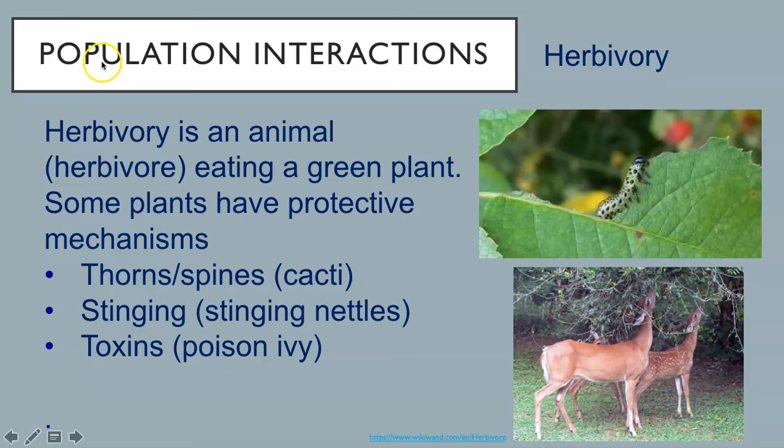Herbivory is an animal, or herbivore, eating a green plant. Some plants have protective mechanisms like thorns and spines in the case of cacti, stinging in the case of stinging nettles, or toxins like poison ivy. Herbivores can be small or large.